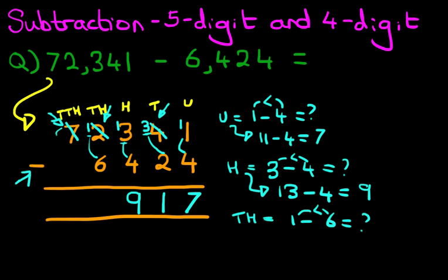7 minus 1 is? 6. And we take this 1 and add it to the right-hand side. So the thousands has now become 11 minus 6. So what is 11 minus 6? That's right, it is 5. 11 minus 6 is 5.